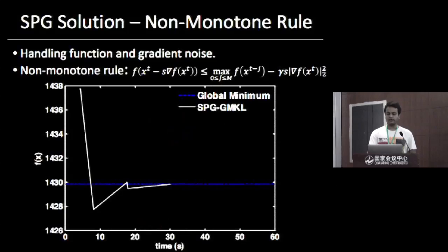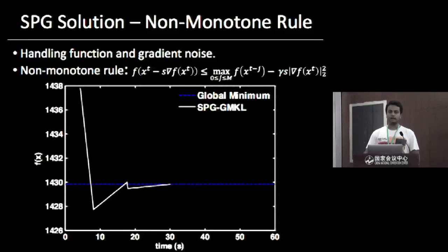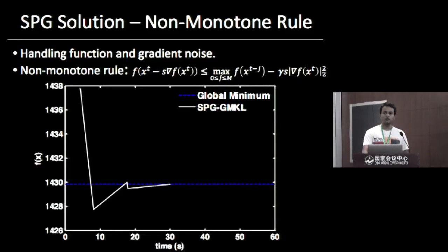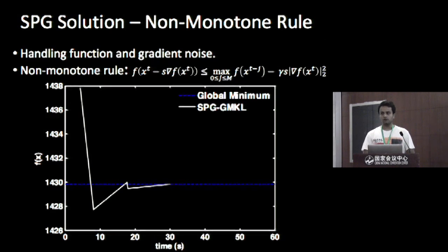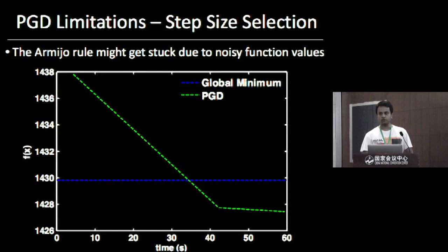The second component added to PGD is the non-monotone rule. Instead of using the Armijo rule which forces a monotone decrease in the objective function, we use a non-monotone rule — relaxing the objective to allow increases in between, with decrease on average. This makes the optimizer robust to function and gradient noise. SPG may underestimate the objective due to noise and go below the global optimum, but it can recover because of the non-monotone rule, whereas PGD would have gotten stuck.